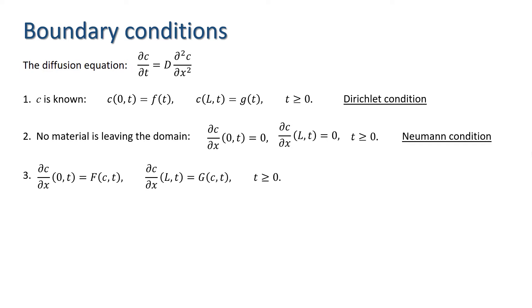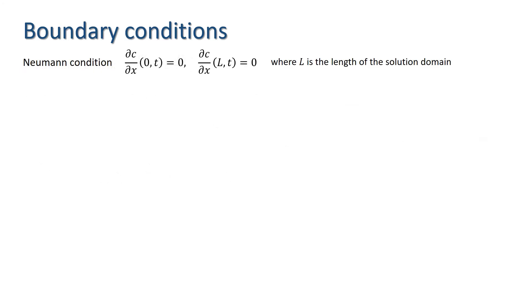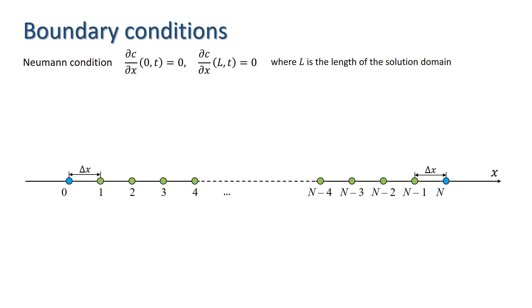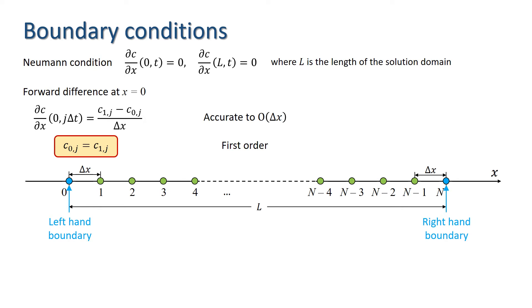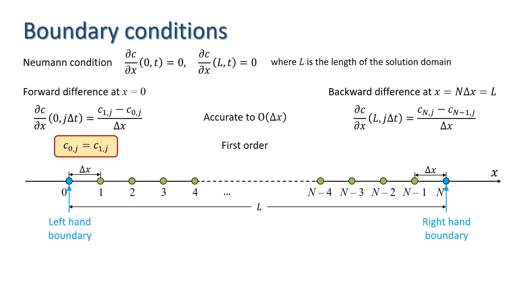Consider the Neumann condition: dc/dx at the boundaries is zero for all time. Numbering nodes along the x-axis from 0 to N, at the left-hand boundary we use a forward difference approximation giving c_{1,j} − c_{0,j} divided by delta x, which yields c_{0,j} = c_{1,j}. At the right-hand boundary, a backward difference gives dc/dx = (c_{N,j} − c_{N-1,j})/delta x, yielding c_{N,j} = c_{N-1,j}.